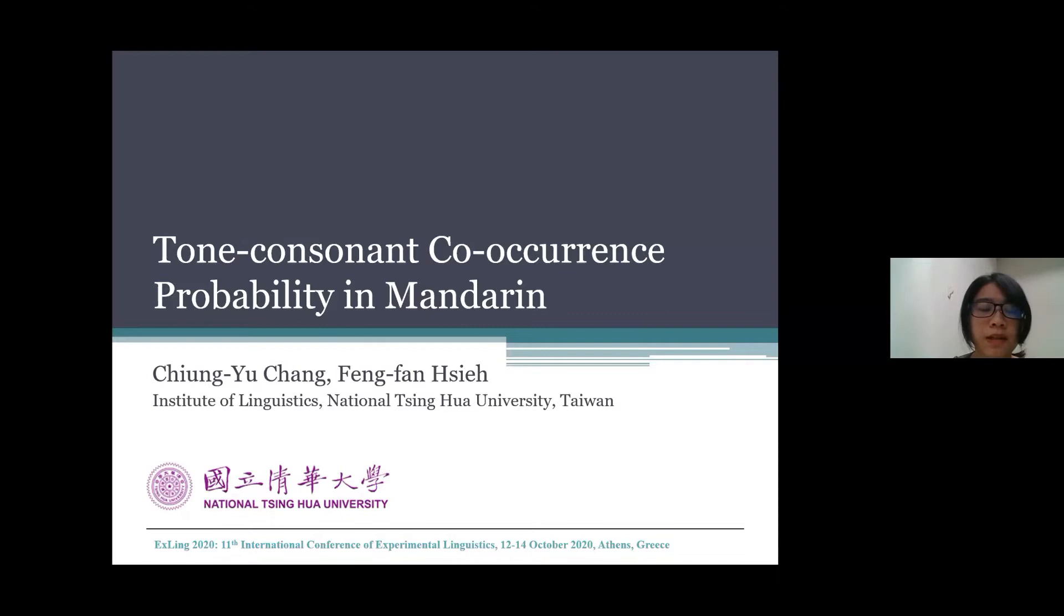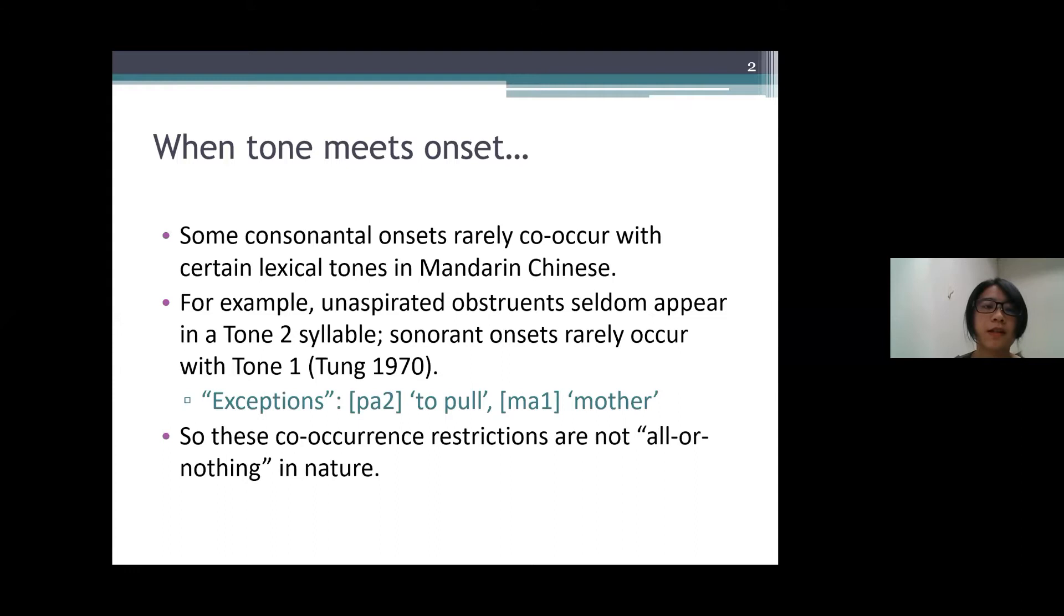Hello everyone, I'm Chongi Zhang, and my topic is on tone consonant co-occurrence probability in Mandarin. This work is in collaboration with Dr. Huang Fanxue.